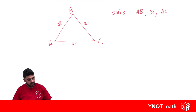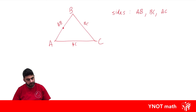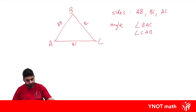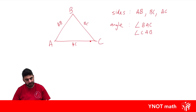It doesn't matter in the ordering of the letters, but usually alphabetical order is the norm. We can also call the angles with the letters. So this angle here, we can call either angle BAC or angle CAB. As long as whatever vertex is where the angle is, is in the middle of our labeling. So angle BAC and CAB refer to the same angle.